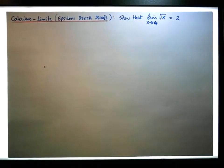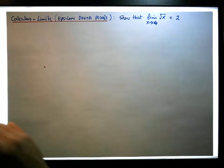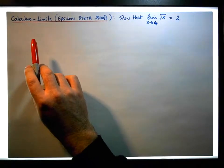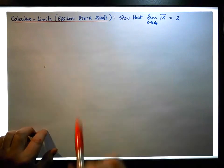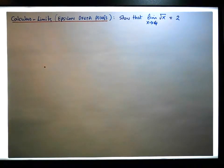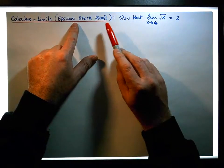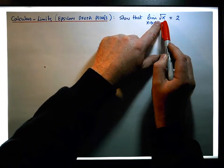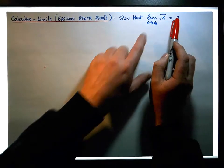Hi guys, this is Jonathan Lambert with Maths and Stats. This video, another in our series dealing with calculus and limits, and in particular epsilon-delta proofs, is going to show how we can use an epsilon-delta proof to show that the limit of the square root of x as x tends to 4 is in fact equal to 2.